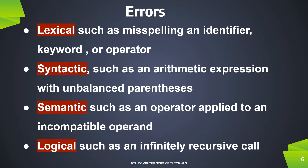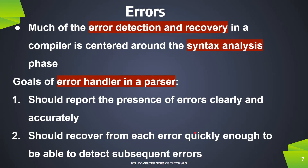The third type is a semantic error, such as an operator applied to an incompatible operand. If you use an incompatible operator, this is considered a semantic error. The fourth type is a logical error, such as an infinite recursive call — using a logical error in an infinite loop is a logical error.